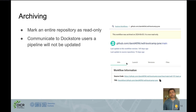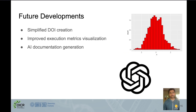That's it for the new features I'd like to highlight. I'll mention very quickly some future developments: we're going to simplify DOI creation even further, we'd like to improve the visualization of execution metrics, and we're also experimenting with generating documentation for workflows using AI.